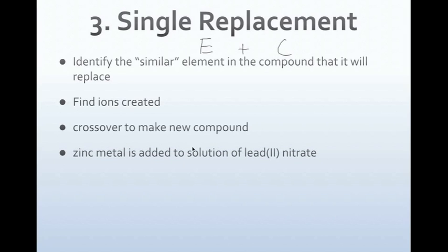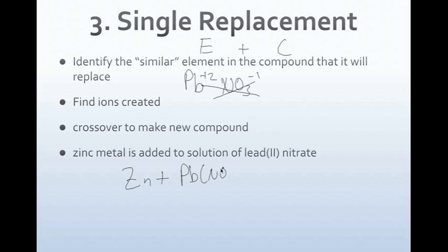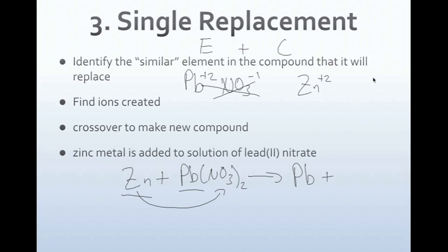For example, zinc metal is added to a solution of lead 2 nitrate. Zinc is our element. Lead is Pb with a plus 2 oxidation number, and nitrate is NO3 with a negative 1 charge. We crisscross to get Pb(NO3)2 as our starting compound. Since zinc is a metal, it switches with lead. Lead goes by itself as Pb. Zinc has a plus 2 oxidation number and bonds to nitrate (NO3, negative 1). We crisscross to get Zn(NO3)2.